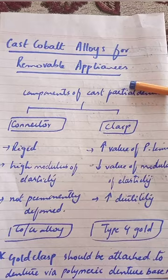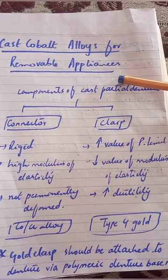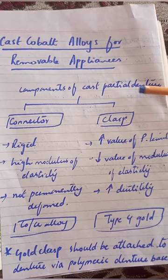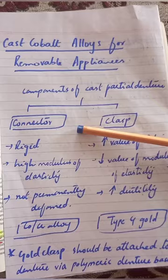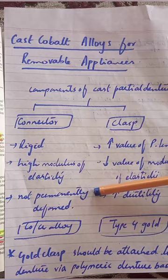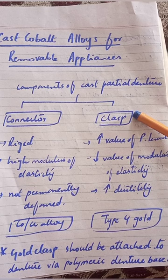For removable appliances such as partial dentures, we use cast cobalt alloys. A partial denture has two components: the connector and the clasp. The connector material should be rigid, with a high modulus of elasticity, and should not be permanently deformed — if deformed, it should recover. So we use cobalt-chromium alloy for the connector.